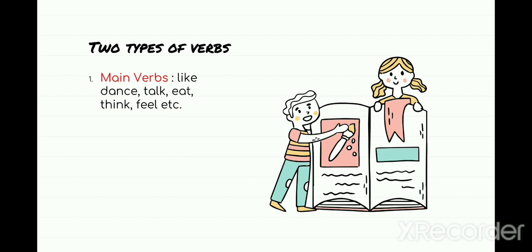These are your main verbs. For a mental action, for example: I love eating mangoes in the summer. Now here there are two verbs. You might say eating is also there, but which is the main action word? The main mental action or the main word being used is love. So here your main verb is love.